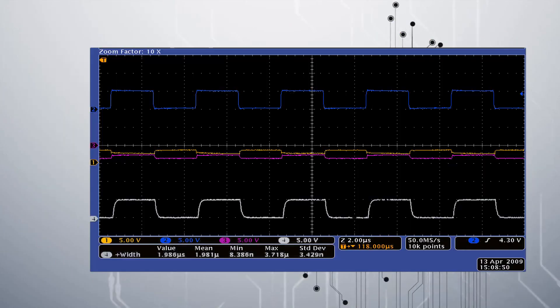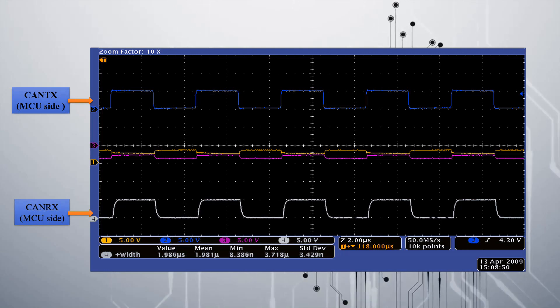We will take the CRO output of CAN bus with a single node. Here, the top one represents the CAN TX, that is MCU side. And CAN RX is represented below. And CAN H, CAN L, that is the actual CAN bus, is in the center.